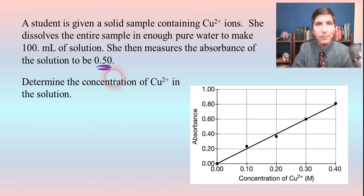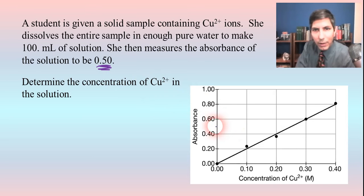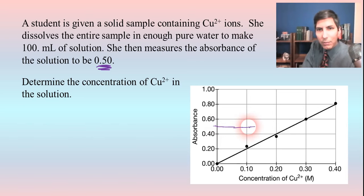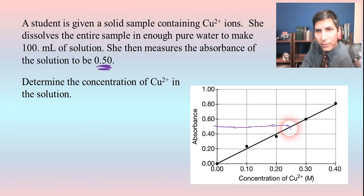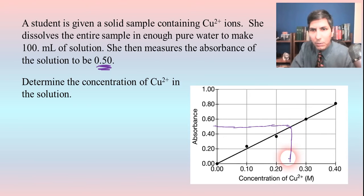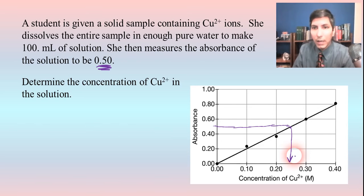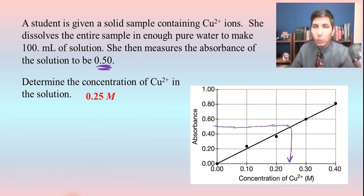Absorbance is normally a unitless value. So we're just going to go over to 0.50 on the graph and carry that across. It seems to end up right around a concentration that's right between 0.2 and 0.3. So it's pretty safe to say that the concentration of copper ions is about 0.25 moles per liter. That's all you have to do — once you have the calibration curve, just read the graph.